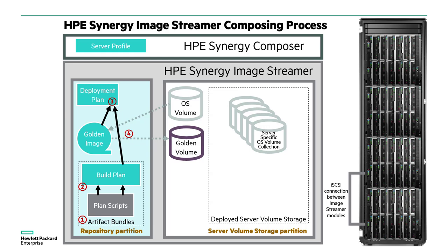Number three shows a build plan is combined with a previously created OS golden image to define a deployment plan. Number four shows the golden image, when it was created, was combined with an OS volume to create a golden volume used for fast deployments.